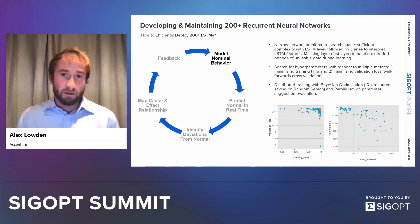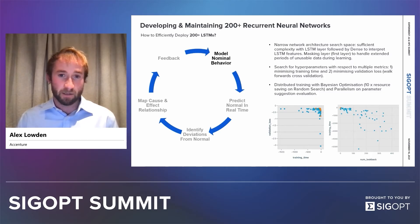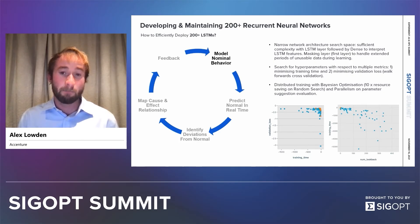We then reduce the requirement on resources by searching for hyperparameters with respect to multiple metrics, which is a nice feature available with Sigopt. So instead of just minimizing for validation loss, you're also minimizing for training time — finding the best model that trains in the shortest amount of time.